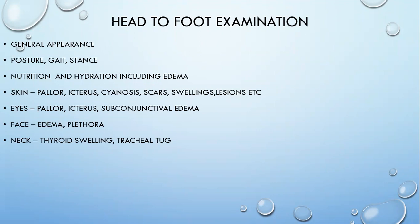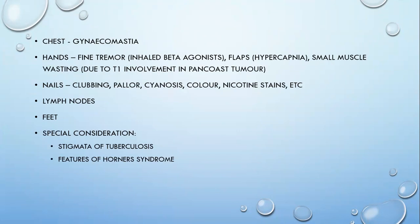In skin examination, we look for pallor, sinus, scar, swellings, and lesions. We have to look specifically for subconjunctival edema, because facial edema with subconjunctival edema may point towards an SVC obstruction. In the face, specifically look for edema or to look for subconjunctival edema. In the neck, look for thyroid swelling or a tracheal tug. In the chest, look for gynecomastia. Gynecomastia in respiratory system has two important points: a patient with bronchial asthma or COPD taking chronic steroids can develop gynecomastia, and similarly ACTH-producing small cell lung cancers can produce gynecomastia as a paraneoplastic manifestation.